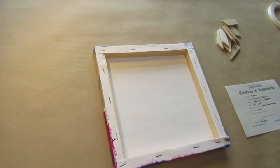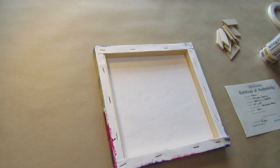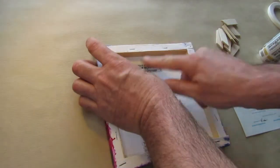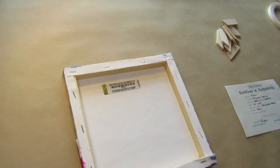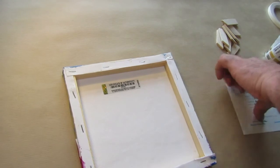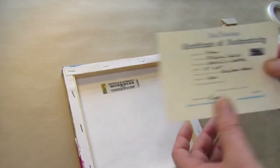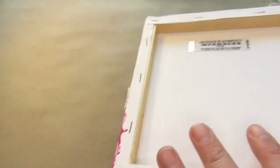So we put one on the painting itself, the corresponding serial number goes on to the actual certificate. So you can see there the number, so the number is on the actual painting and it's on the certificate.